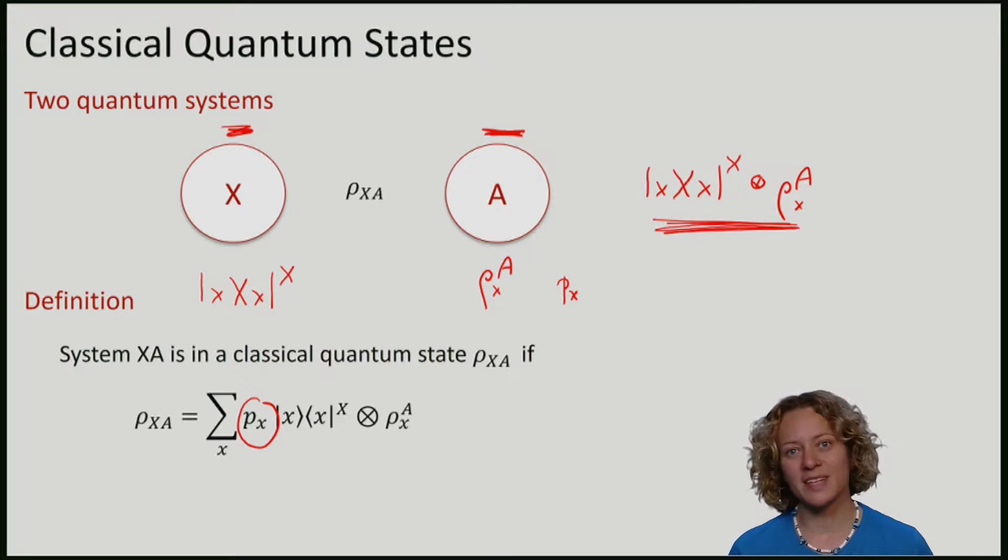You can see that this density matrix has a very special form because it is classical on the X part but arbitrary on the A part.